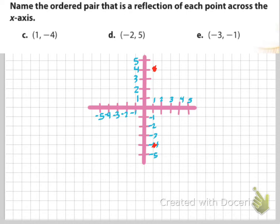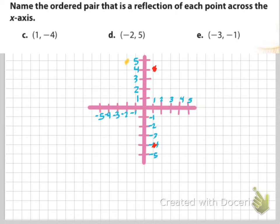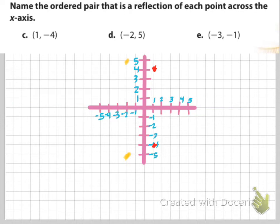The next ones I'll do in yellow. We go negative 2 to the left and up to positive 5 — that's our first spot at negative 2 comma positive 5. Now for the reflection across the x-axis, I go over to negative 2 but down to negative 5. You can see there's a beautiful reflection of the yellow dots.